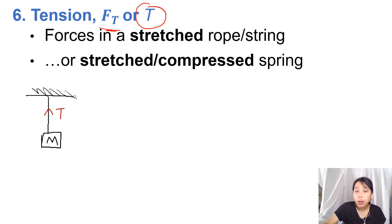One thing to note is that tension along this whole part of the string is the same. Tension spreads out through the string if we say the string is massless. Massless means the string has some mass, yes, but it's so small compared to the whole system that it's considered negligible. So if the string is massless, tension is the same across the whole string.